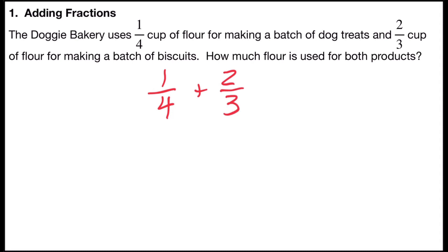So for 4 and 3, if I list the multiples of 4 and 3 and count by 4: 4, 8, 12, 16, 20, and count by 3: 3, 6, 9, 12. I see that 12 is the first multiple that's in both lists.